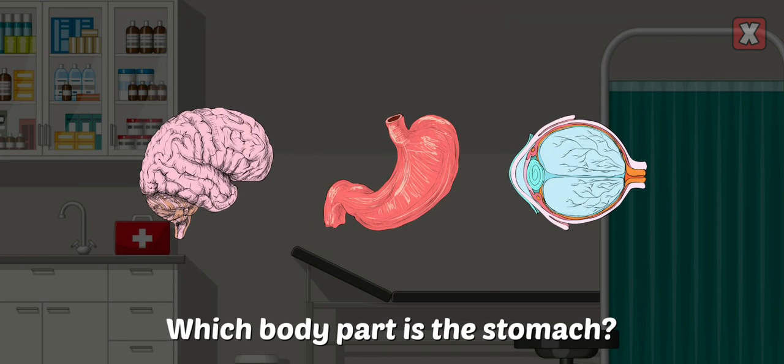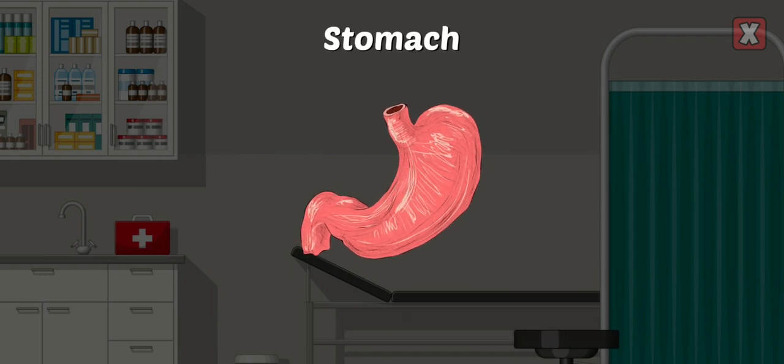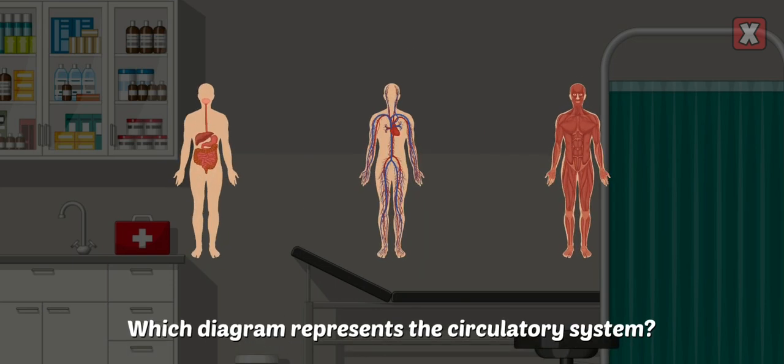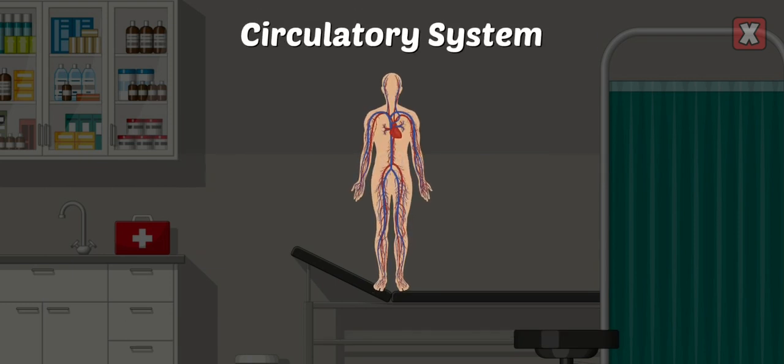Which body part is the stomach? The stomach is the main food storage tank of the body. Which diagram represents the circulatory system? The circulatory system moves blood around the body and consists of the heart and all blood vessels.